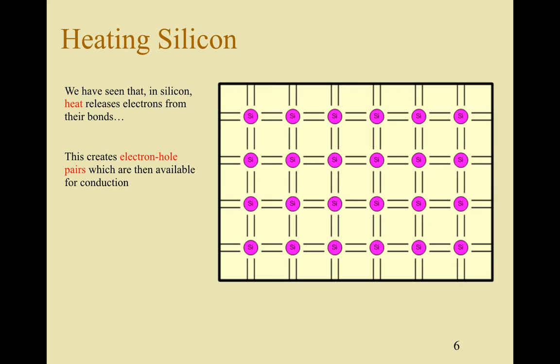So as a result we have holes that can move throughout the substance, we have electrons that can move throughout the substance. Both are charged carriers so we've increased the number of charged carriers in the substance and hence increased the conductivity.